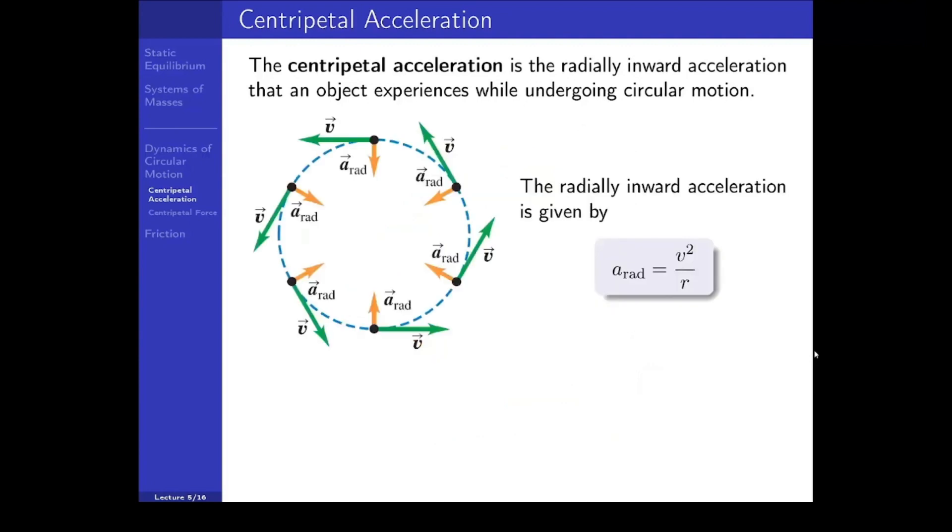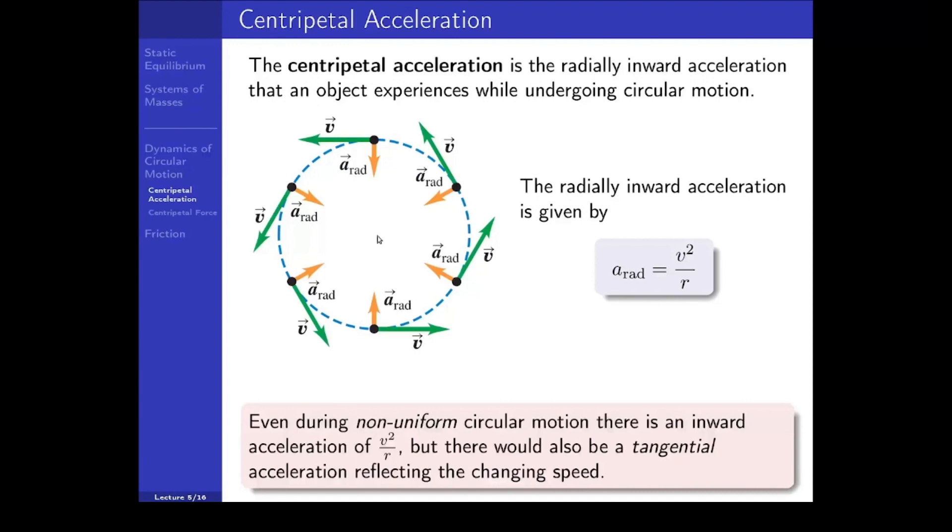The radially inward acceleration is given by the speed of the object squared divided by the radius of the circular path. Even during non-uniform circular motion there is an inward acceleration of v squared over r, but there would also be a tangential acceleration reflecting the changing speed.